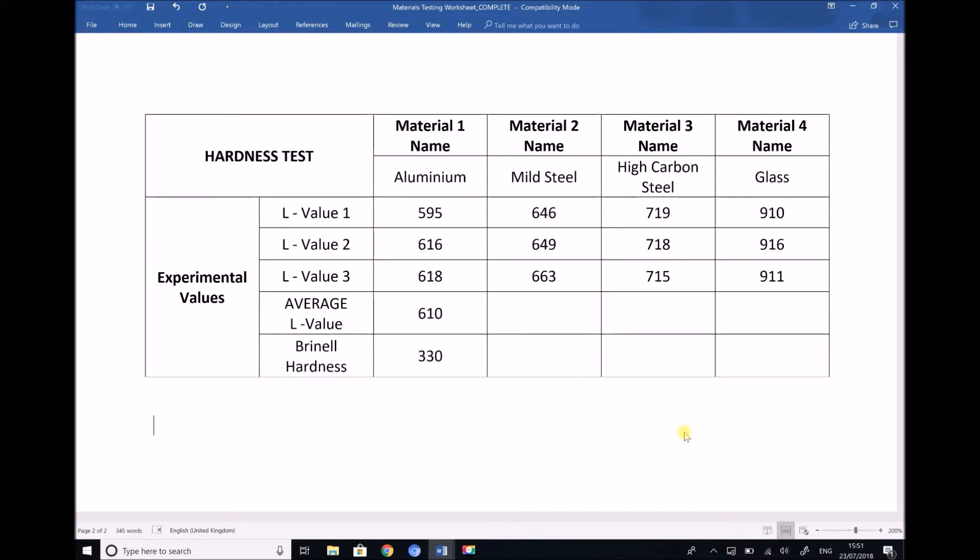So the first step then is to take our three readings and determine the mean average. And that's done by adding the three values together. So in this case I've added 595, 616 and 618 for the aluminium, and then dividing the total by three or the number of pieces of data giving me a mean average of 610.